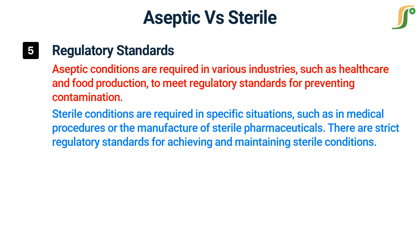Aseptic and sterile conditions are both essential in preventing contamination, but they differ in terms of the level of microbial control and the methods used to achieve them. Achieving and maintaining sterile conditions is crucial in certain industries, such as healthcare and pharmaceuticals, while aseptic conditions are required in many industries, including food production and laboratory settings. Understanding these differences is vital for ensuring the safety and quality of products and services in these industries.